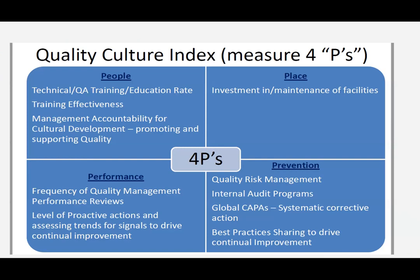For quality management systems, the four P's are most important: People — technical staff, QA, and all those helping to meet your objective and bring the device to market. Ensure people are technically sound, trained, and that training effectiveness is maintained. There must be management accountability, responsibility, cultural development, and promotion of quality. Then Place — invest in your infrastructure and work environment, as employees spend nine to twelve waking hours there. They need a good environment to be productive.